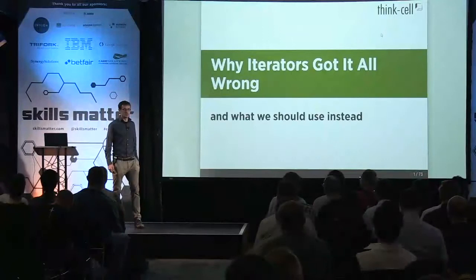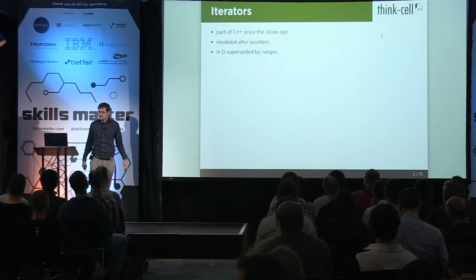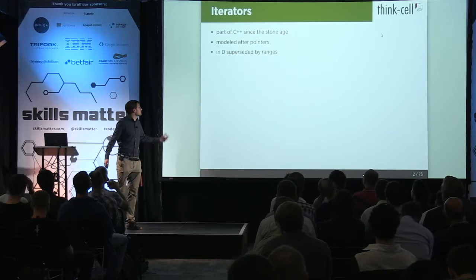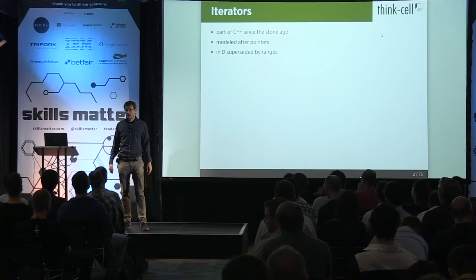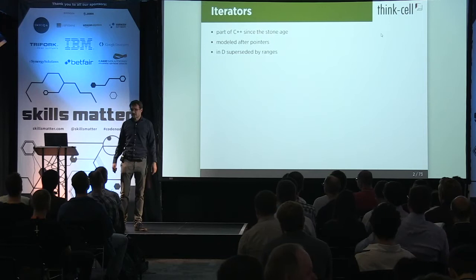So everyone knows iterators. They've been with us since the Stone Age. They're actually originally modeled after pointers, so a very low-level concept. Other people already had the idea that they are bad. In D, they've been superseded entirely by ranges. The C++ committee, when dealing with ranges, decided that that's not the right direction, and I would agree.